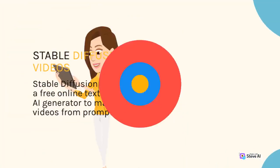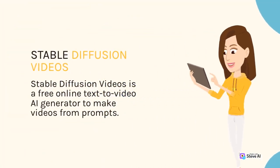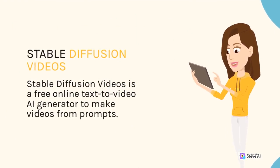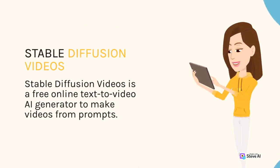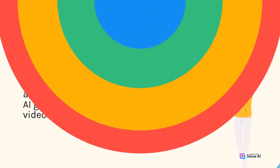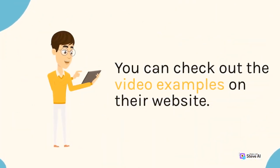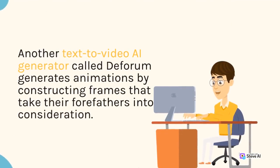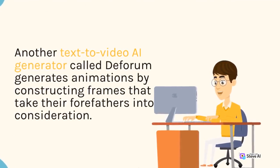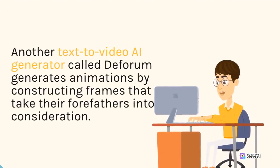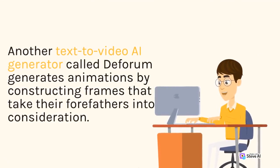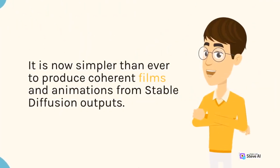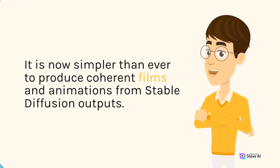Stable Diffusion Videos is a free online text-to-video AI generator to make videos from prompts. You can check out the video examples on their website. Another text-to-video AI generator called Deforum generates animations by constructing frames that take their predecessors into consideration. It is now simpler than ever to produce coherent films and animations from Stable Diffusion outputs.